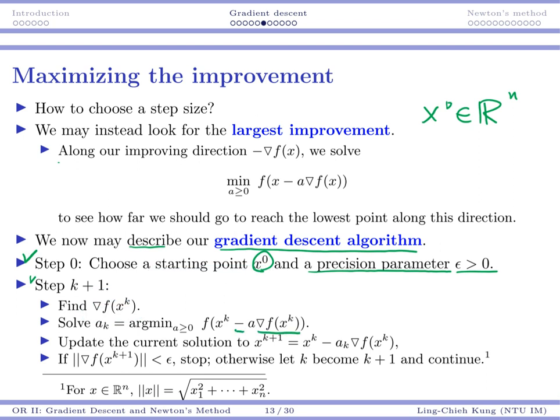So here we need to find ak, which is our step size, which is the value that may minimize this particular thing. Along that direction, we want to find the best we may do, and move to that point. So we will update our current solution from xk to xk+1 by moving this particular step size. So then we will reach the lowest point that we may reach along our improving direction.